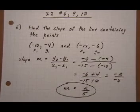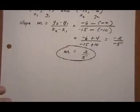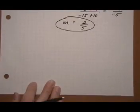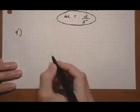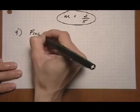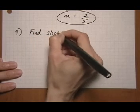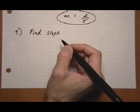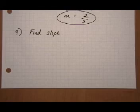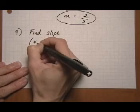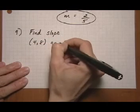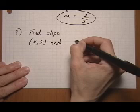Now let's look at number 9. Number 9, we again want to find the slope, and we are given two different points. We are given the points (4, 8) and (-7, 8).